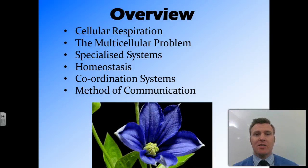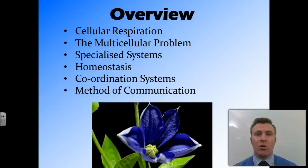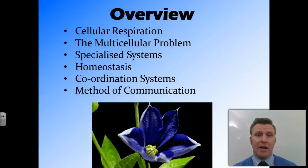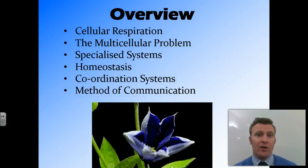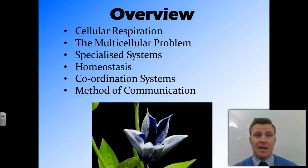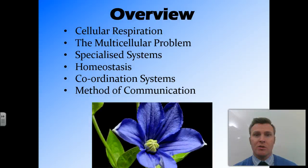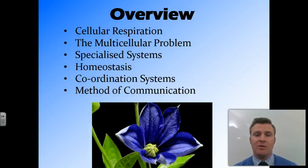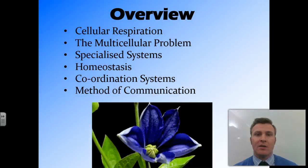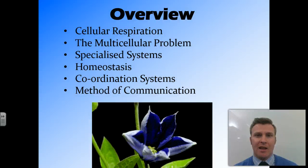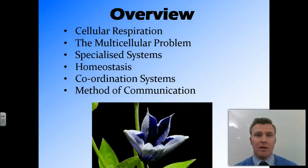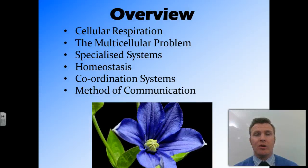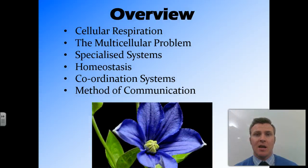In this video, we've looked at cellular respiration and the need for glucose and oxygen to get to all the cells within the body. The multicellular problem — that it's harder for glucose and oxygen to get to all of the cells the more cells there are in a body or organism. The specialised systems and the need to have them to transport glucose and oxygen around the body. Homeostasis and the need for a constant internal environment. We've looked at the coordination systems and we'll go into more depth throughout this topic. And we've looked at the methods of communication: the nervous system, which uses electrochemical impulses and acts very quickly, and the endocrine system, which uses hormones as chemical signalers and acts more slowly.